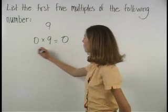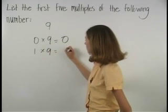So we have zero times nine, which is zero, one times nine, which is nine.